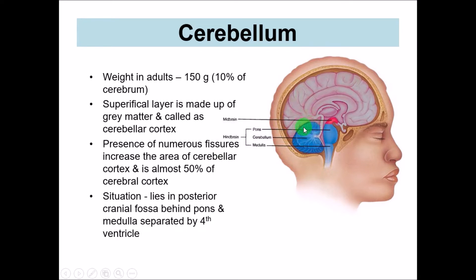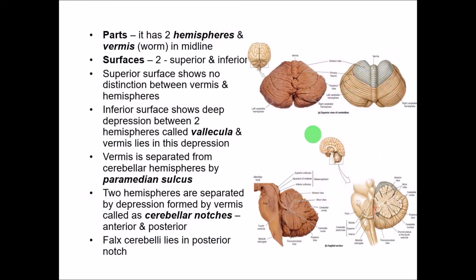The surface area is made up of gray matter, called the cerebellar cortex, just like the cerebral cortex, and deep inside is the white matter. It has two hemispheres — the right and the left — separated by a worm-like structure called the vermis.